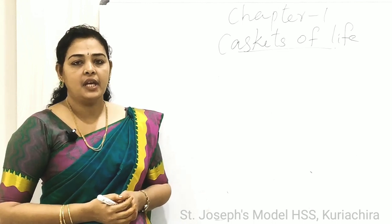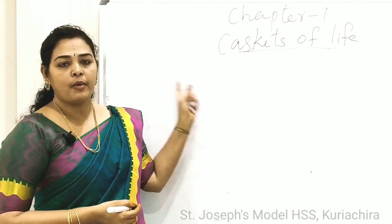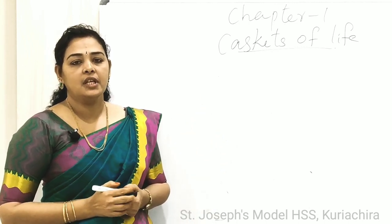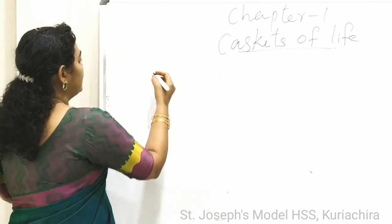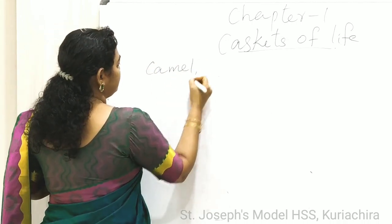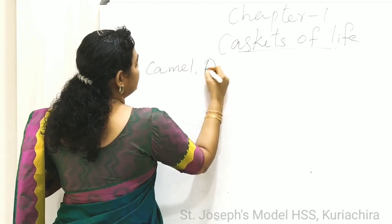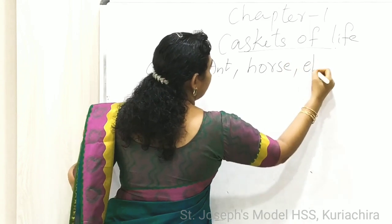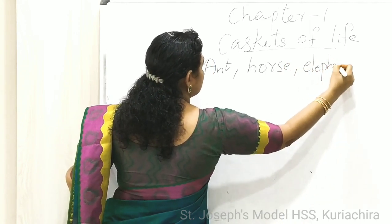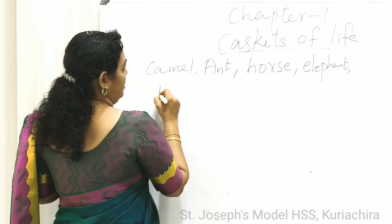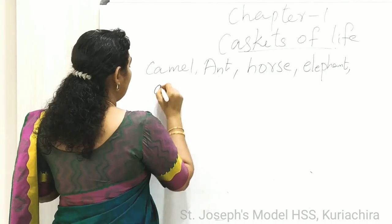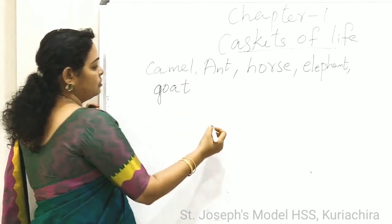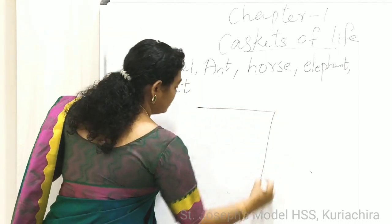So let us do one activity. I am writing the name of the organisms here and we can arrange them from biggest to the smallest: camel, ant, horse, elephant, goat. We have to arrange according to biggest to the smallest.